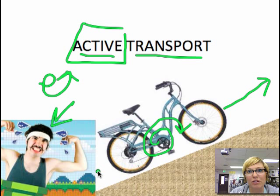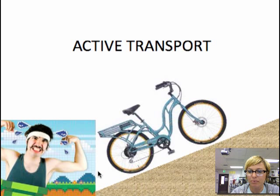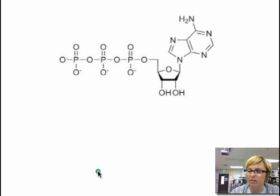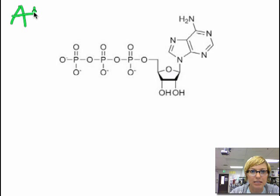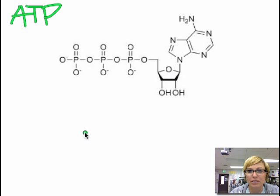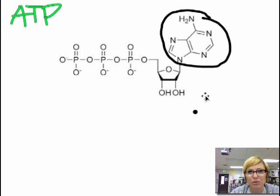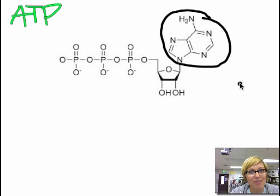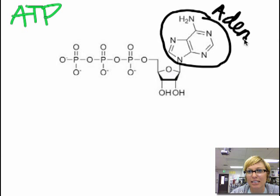So let's talk about the source of that energy. The source of that energy is none other than the superstar ATP. ATP stands for adenosine triphosphate, and when we look at this molecule hopefully you see some things that look familiar. The first thing you're going to see has two rings with nitrogen in it — you're probably thinking, oh, that's a purine, right? It is a purine called adenine — the same purine found in your DNA.